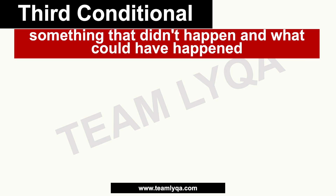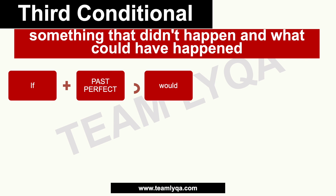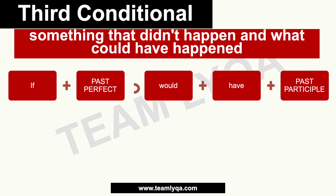Next, we have the third conditional. This is used for something that definitely didn't happen, and we imagine what could have happened if it had. There's a feeling of regret — 'if only this had happened, then this would have happened.' The structure is: 'if' plus past perfect, then a comma, then 'would have' plus past participle. So if the verb has a past participle form, that's what we use.